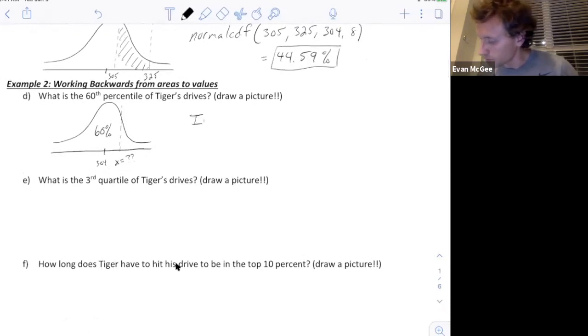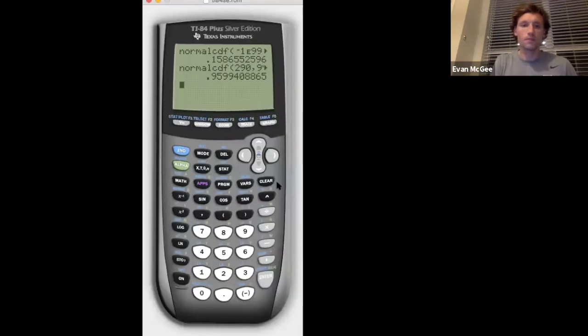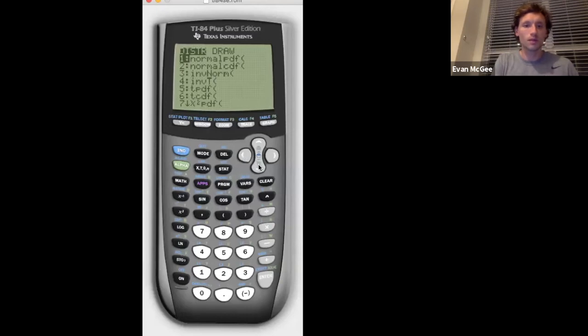What is the length that is greater than 60%? We're going to do something new in the calculator called inverse normal because we're going in the opposite direction. Inverse norm. Now we have three inputs that we're going to use in our calculator. First, you're going to put the area, 0.60 is 60%. Then you're going to put the mean, 304, and the standard deviation is 8.